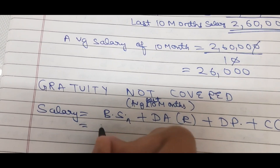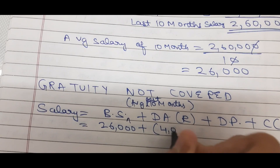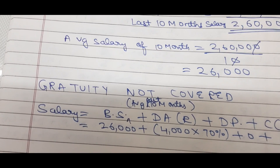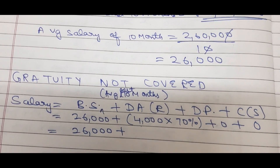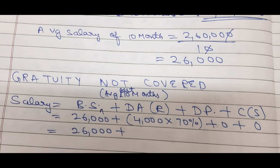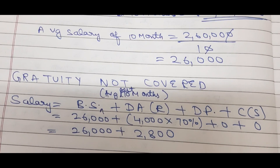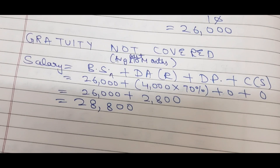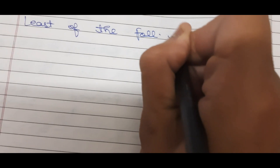Now applying the Gratuity Not Covered salary formula: Basic Salary (average of last 10 months) + DA on retirement + Dearness Pay + Commission on Sales. Basic salary = ₹26,000 (calculated above). DA on retirement = 70% of ₹4,000 = ₹2,800. Dearness Pay and Commission on Sales are not given. So Salary = ₹26,000 + ₹2,800 = ₹28,800. Now we compute least of the following — will be exempt.